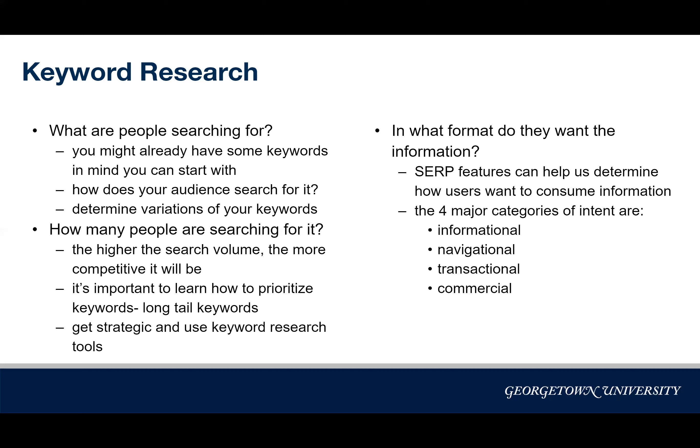Understanding the intent of a search can also help you decide how to format your content, and there are four major categories of intent. The first is informational — when people are looking for information on a certain topic, like an application deadline. Navigational is when people are looking to navigate to a certain page, like the Georgetown University Facebook page. Transactional is when a transaction occurs, such as purchasing a product. And commercial is typically when users want to compare information on different products.